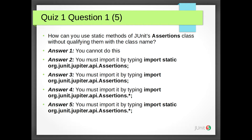Answer 5: You must import it by typing import static org.junit.jupiter.api.Assertions.*. The correct answer is number 5: you must import it by typing import static org.junit.jupiter.api.Assertions.*.